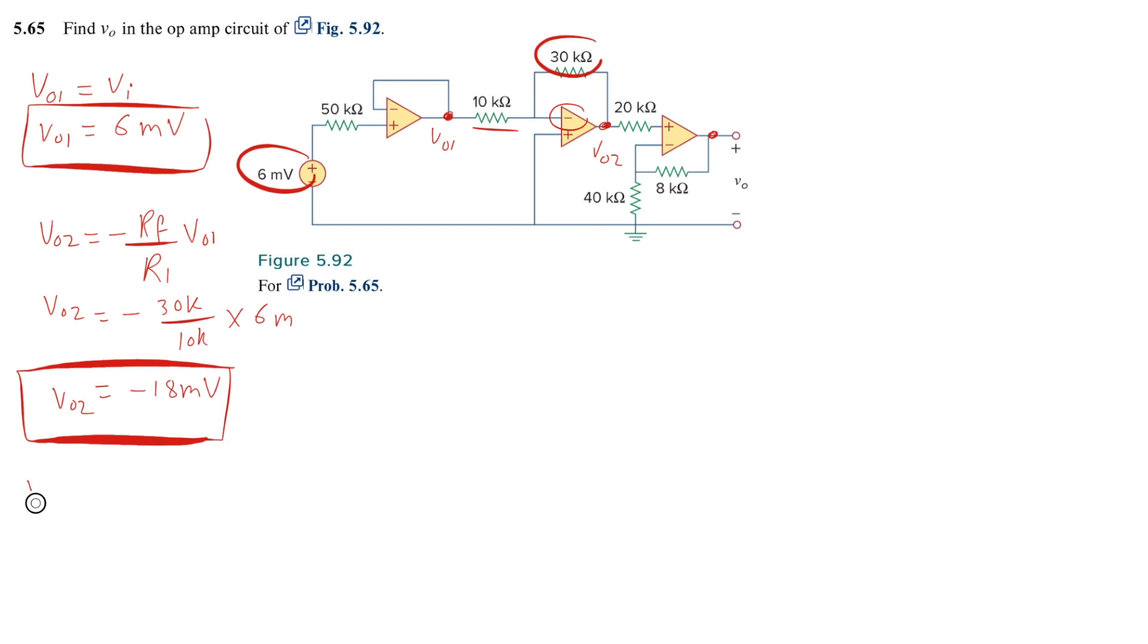So we know that the V out is equal to 1 plus RF over R₁ times V₀₂. This is V₀₂.